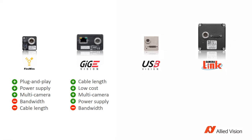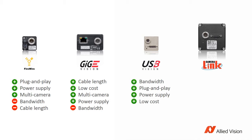USB3 Vision is a machine vision standard for USB3. With its high bandwidth of 350 megabytes per second, you can transmit high-resolution images at high frame rates. Like Firewire, it's plug and play and powers the camera over the interface cable. Components are easy to source and affordable because USB3 is an IT and consumer electronics standard. However, its cable length is limited to a few meters.